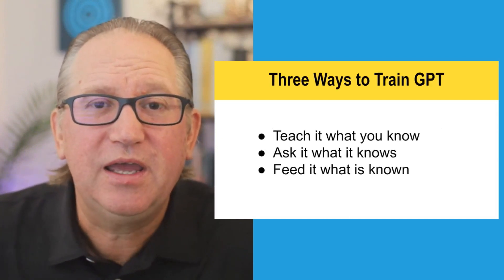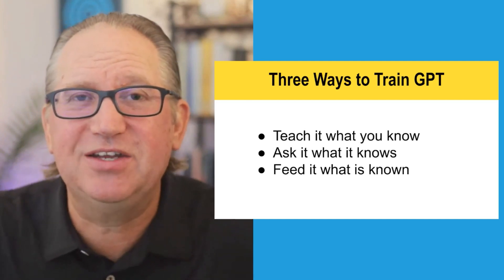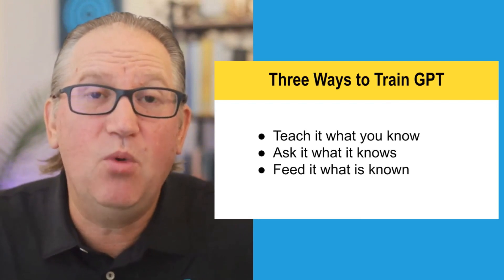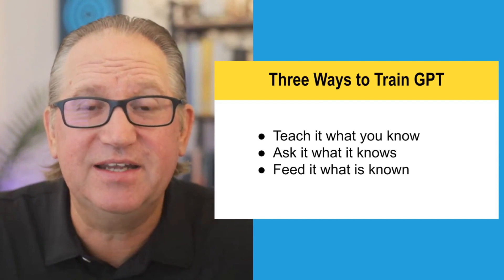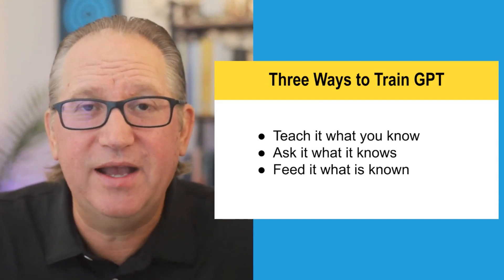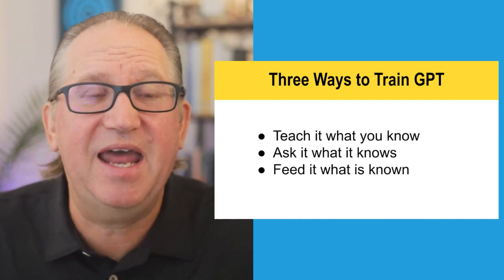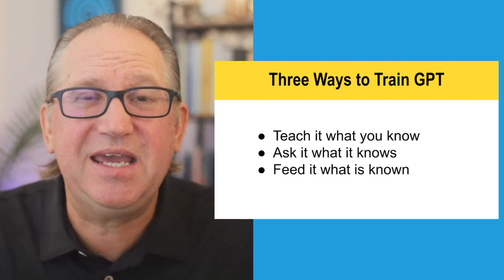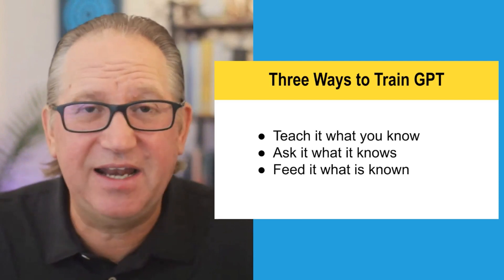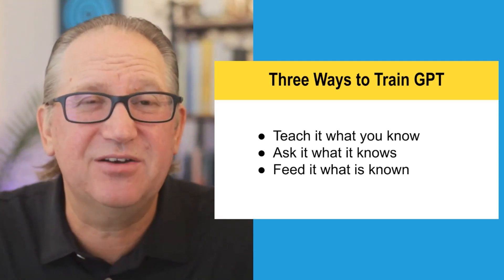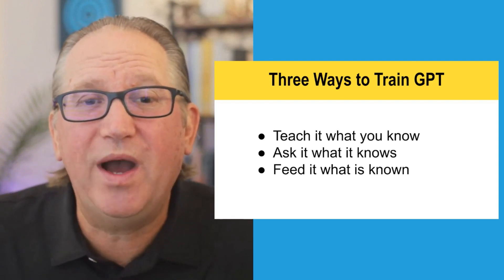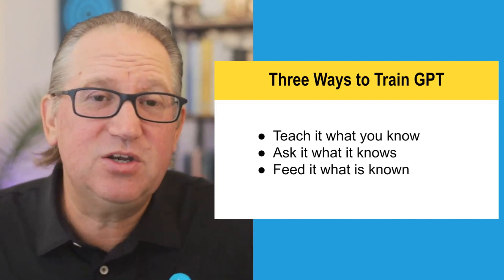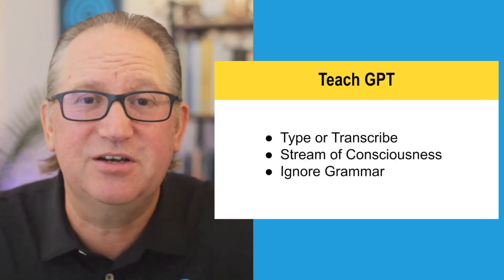What we're going to do is I'm going to show you three different ways to train ChatGPT to get better answers, to create more content for you, more effective content, more accurate content. The three ways are: we're going to teach it what you know, then we're going to ask it what it knows, and then we're going to feed it what is known. You can do a combination of all three of these, but I'm going to break each one down so you understand how they work.